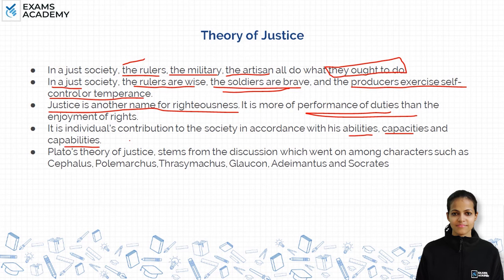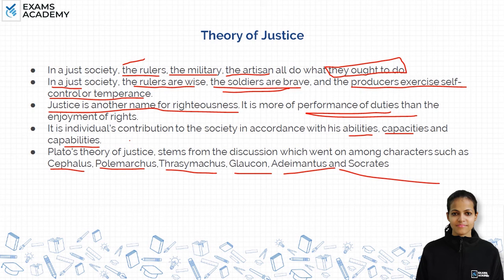Plato's theory of justice stems from discussions among characters such as Cephalus, Polemarchus, Thrasymachus, Glaucon, Adeimantus, and Socrates in Plato's Republic. This has been asked in UGC NET, so you should be aware of these characters — you don't need to remember every name perfectly, but you should recognize them.